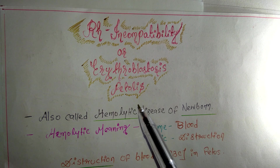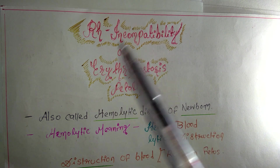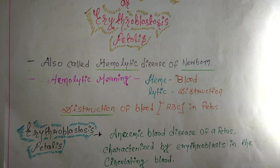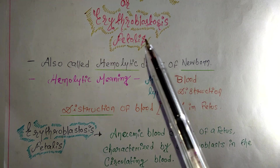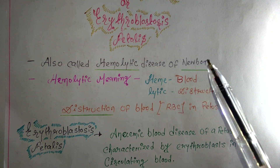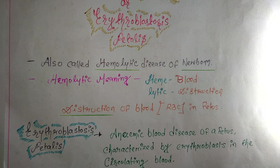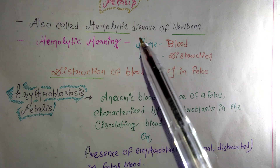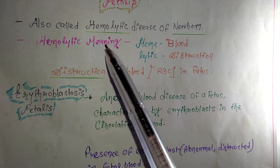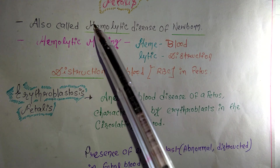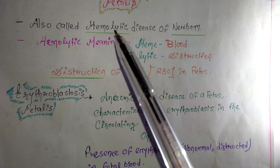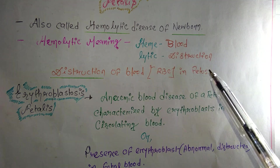Let's understand the meaning of the term erythroblastosis fetalis. It is also called hemolytic disease of the newborn. Let's break down the word 'hemolytic': 'heme' means blood, and 'lytic' means destruction.